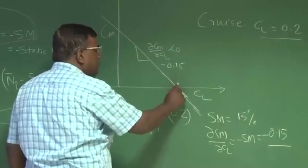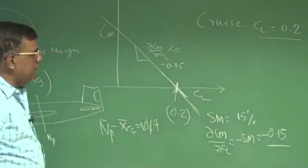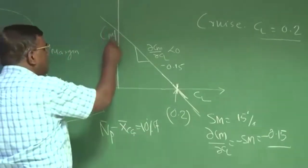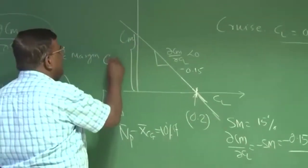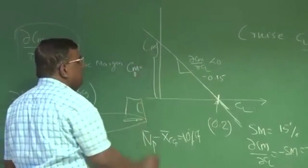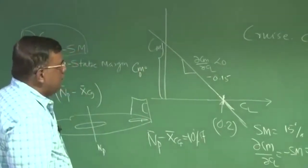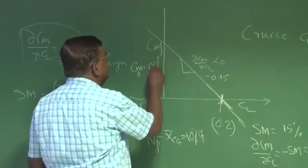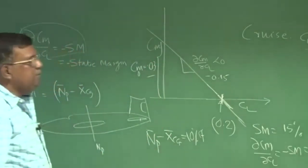So static margin is 15 percent means that dCm/dCL, which is equal to minus static margin, which is minus 0.15. So this slope is minus 0.15. And I know I am going to trim the airplane at CL equal to 0.2. So automatically I know what is the value required Cm naught, which is Cm at CL equal to 0. So that will be 0.15 times 0.2. So this is 0.03.